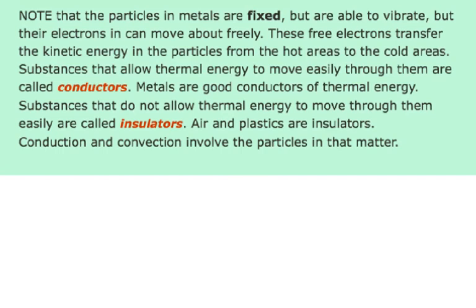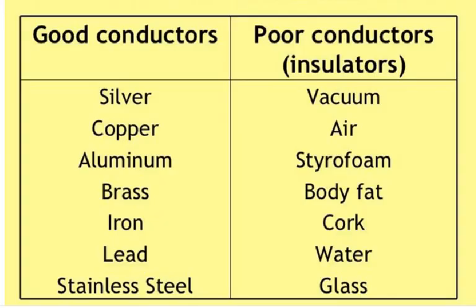Here, the definition of Conductors and Insulators are given. Please copy this part to your notebook. Substances that allow thermal energy to move easily through them are called conductors. Examples: metals. Substances that do not allow thermal energy to move through them easily are called insulators. There are examples for good conductors and poor conductors: silver, copper, aluminum, brass, iron, lead, stainless steel.